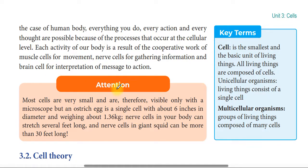Most cells are very small and are therefore visible only with a microscope. But an ostrich egg is a single cell which is about six inches in diameter and weighs about 1.36 kilograms. Additionally, nerve cells in your body can stretch several feet long, and nerve cells in a giant squid can be more than 30 feet long.